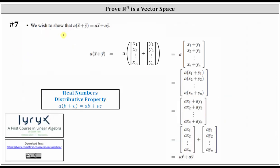Step seven: we show that a times (vector x + vector y) equals a times vector x plus a times vector y. We find the sum of vector x and vector y by adding corresponding elements, then multiply a by each sum. Using the distributive property to distribute a to the x and y values inside the column matrix, we then break the result into the sum of two column matrices: a times vector x and a times vector y. Step seven is complete.